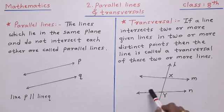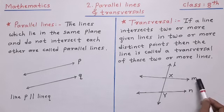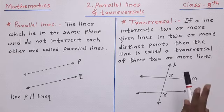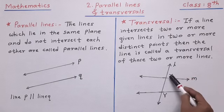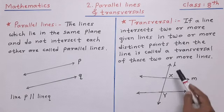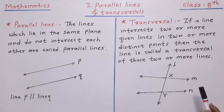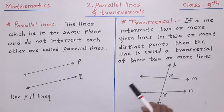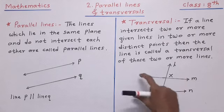Just like here in the figure, you can see that line L is intersecting line M and line N in two distinct points, point X and point Y. Line L is intersecting at point X and point Y respectively with line M and line N. So we can say that line L is the transversal of line M and line N.